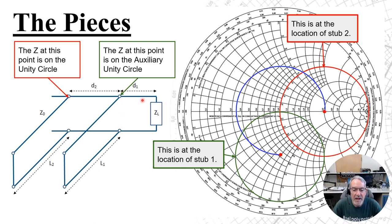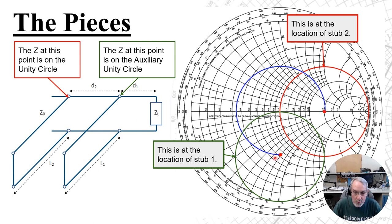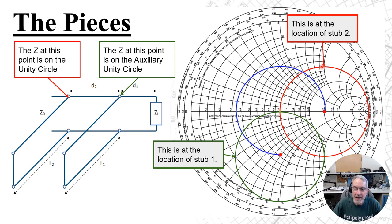The idea being: as we move from the load down the transmission line, in our process we get to this point. If we can get onto this auxiliary circle, then we know once we've moved this distance back toward the generator, we're going to be on this matching circle. And it's very simple then to complete the process to get our match — and that's the whole process.